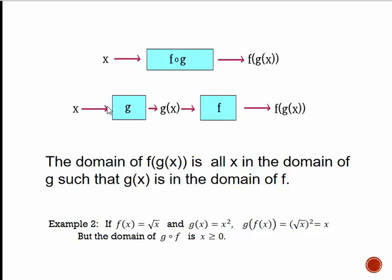The domain of a composition function can be subtle. Technically, you're going through two functions. You can't be in the domain of the composition if x is not in the domain of the first function you evaluate. So the domain of f∘g is all values in the domain of g such that the results are also in the domain of f.